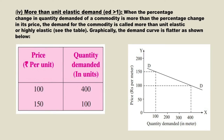The fourth type is elasticity of demand more than 1. Here, the quantity demanded increases very highly to a small decrease in price, or decreases very highly to a small increase in price. From the table, the quantity demanded decreases from 400 to 100 units for an increase in price from 100 to 150. The demand curve is slightly flatter, denoting that for a small change in price the quantity demanded changes very highly.